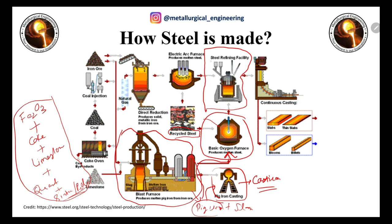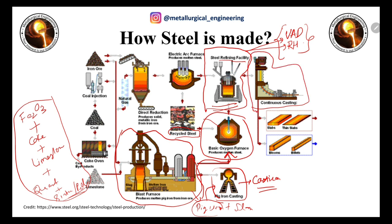The molten steel then goes into secondary steelmaking — a steel refining facility that includes vacuum arc degassing, VAD processes, and RH degassers. Here, alloying is performed and hydrogen or nitrogen content is removed. After secondary steelmaking, the steel goes to continuous casting, producing slabs, thin slabs, blooms, and billets, from which wire, rods, rails, and other products are made.